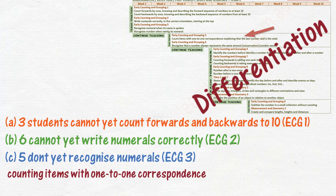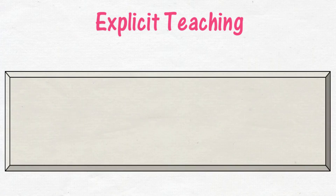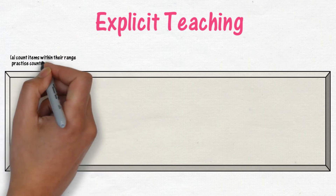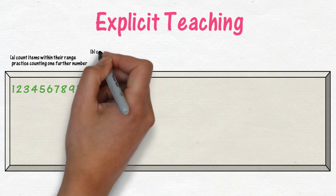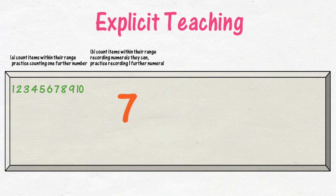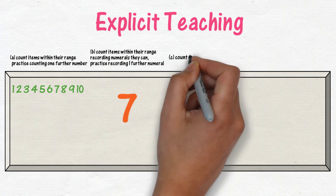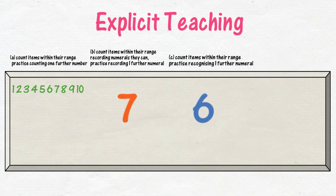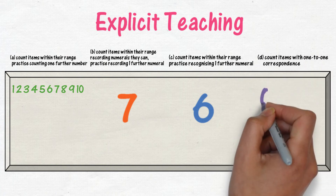All students can engage in the explicit teaching segment of the lesson that includes these levels. The explicit teaching segment covers the levels of concepts that students will be investigating. Begin explicit teaching using questioning at the lowest level of understanding, then proceed through other levels. Using a different colour for each level allows students to identify and name their level by colour. For example: A — counting items within their range and practising counting one further number; B — counting items within their range, recording the numerals they can and practising recording one further numeral; C — count items within their range, practise recording one further numeral, and count items with one-to-one correspondence.